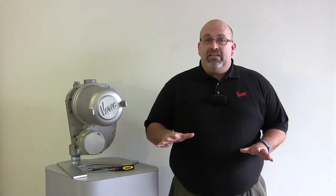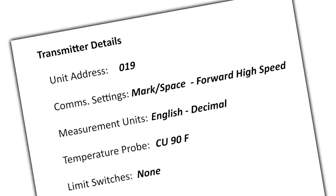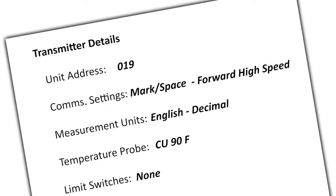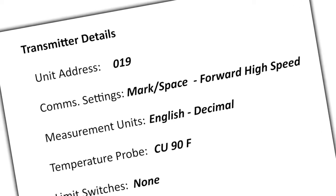Before we do anything, write down the configuration settings of the existing transmitter. This includes knowing the unit address of the Markspace communication setting, the measurement units, and if you have a temperature probe connected or limit switches configured, you'll need their details as well.